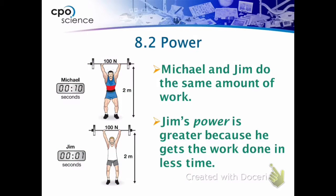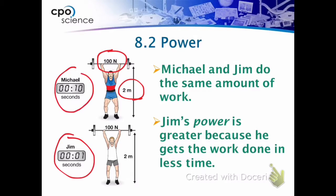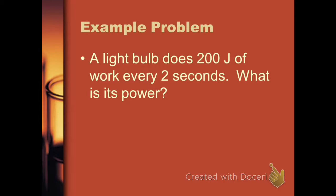Here's a case where we're looking at two different people doing the same amount of work — 100 newtons of force applied over 2 meters, so 200 joules of work. But Jim does it in 1 second and Michael does it in 10. So Jim's power is greater: same amount of work but in less time.